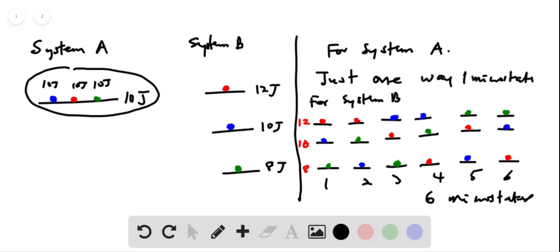Of course the answer is going to be system B, because system B we have six microstates and we know that microstate number, or number of microstates, is proportional to entropy. So the higher the number of microstates you have, the higher the entropy, and system B has six microstates.